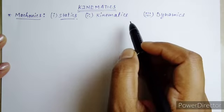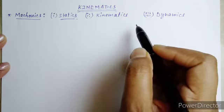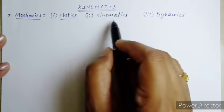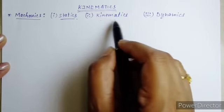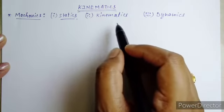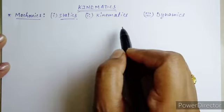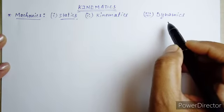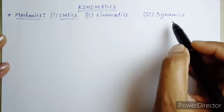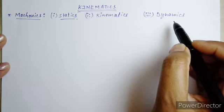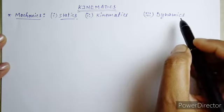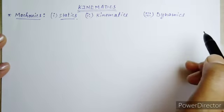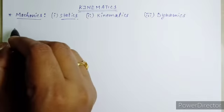Kinematics studies motion without taking into account the factors which cause motion. That means we will be only focusing on the motion of the objects and not on the causes of that motion. The last one is Dynamics — it is that branch of mechanics which deals with the study of motion of objects taking into account the factors which cause motion.